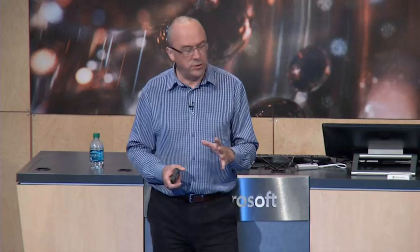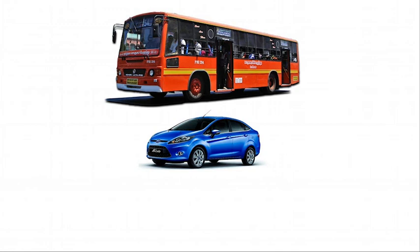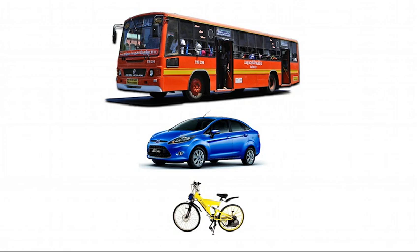Going from a world where everything is 0 or 1 to where everything is described by numbers between 0 and 1 doesn't sound like a big deal. But let me show you an example that will convince you this is actually quite a radical perspective. Bus, car, bicycle — the bus is longer than the car, the car is longer than the bicycle, so the bus must be longer than the bicycle. That's transitivity. Seems like complete common sense. But if you go from determinism to uncertainty, you can have non-transitive situations.